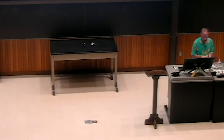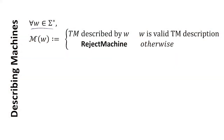We are defining a function that takes in a string — any finite string of zeros and ones. We're going to produce the Turing machine; the output of the fancy M function is a Turing machine. It's either the Turing machine that that string represents — if that string represents a valid Turing machine, the result of fancy M operating on that string is a Turing machine, the one that W describes.